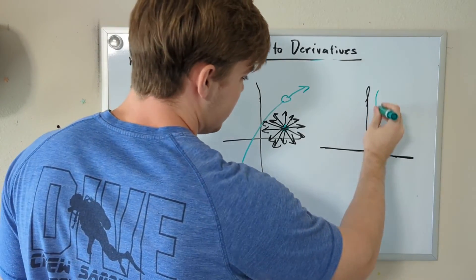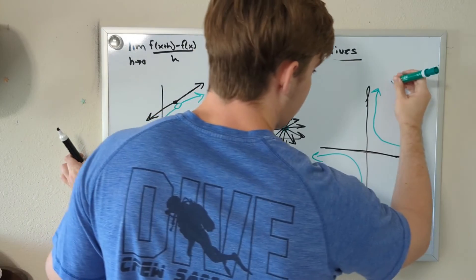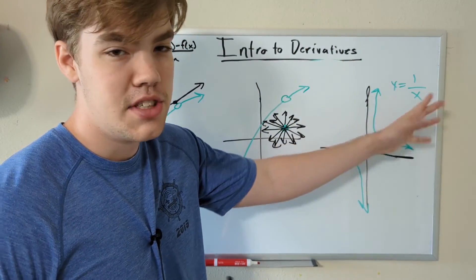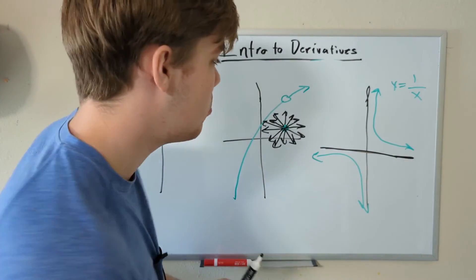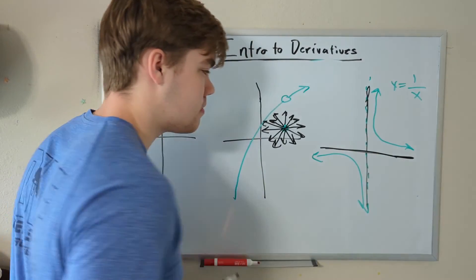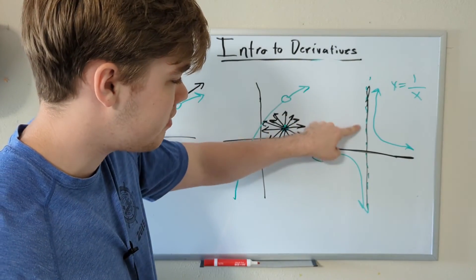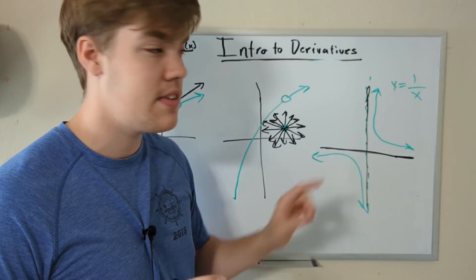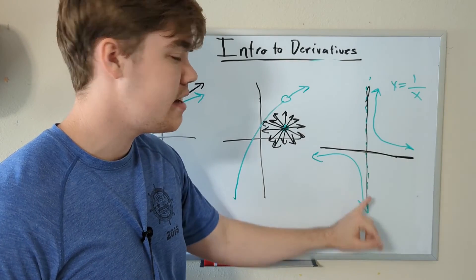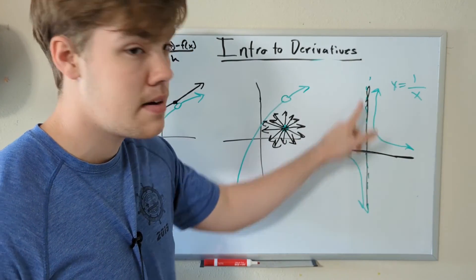The last example is y equals 1 divided by x. We can't plug in 0 for x because then we get 1 divided by 0, which does not exist. So we have a vertical asymptote here. This function does have a derivative and it can be solved, but we cannot find the tangent line at this vertical asymptote. We have an infinite discontinuity at x equals 0, so we cannot find the instantaneous rate of change at this point. We can find it anywhere along these two lines, but not at 0.